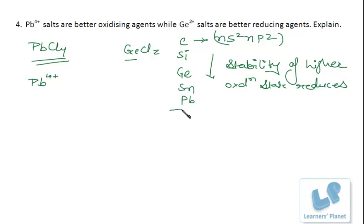So, which will be more stable in this case? Pb2+. That is the outer P electrons. This is due to the inert pair effect. This is because of the inert pair effect.